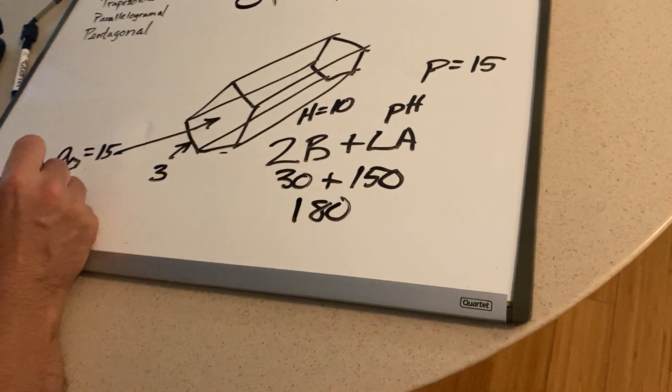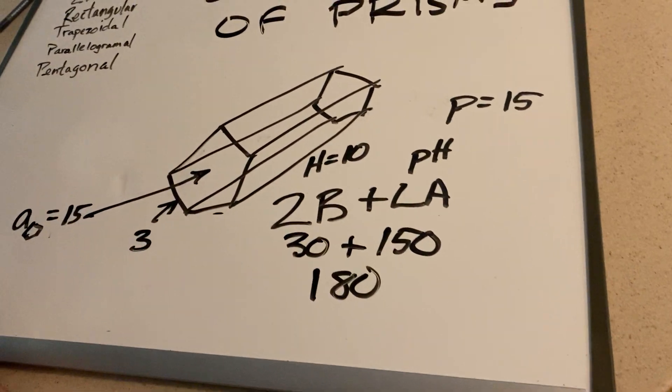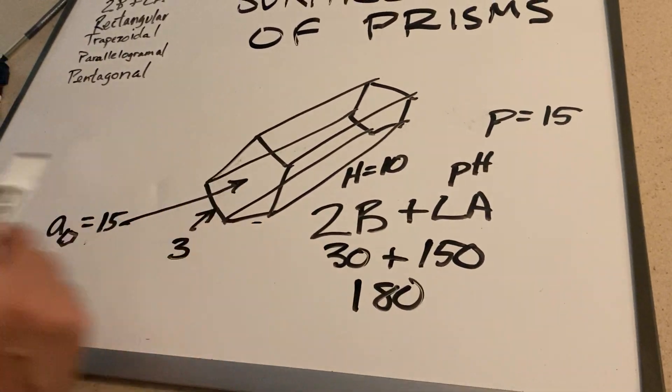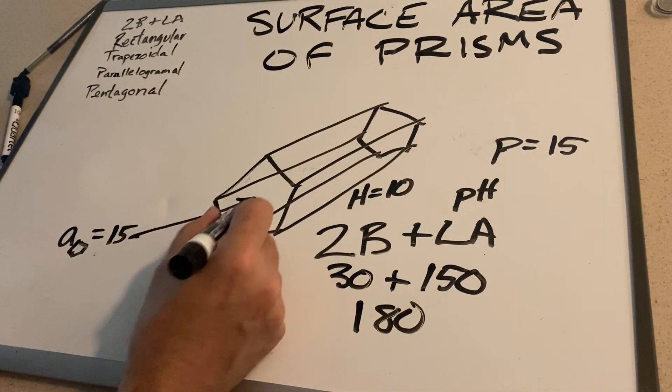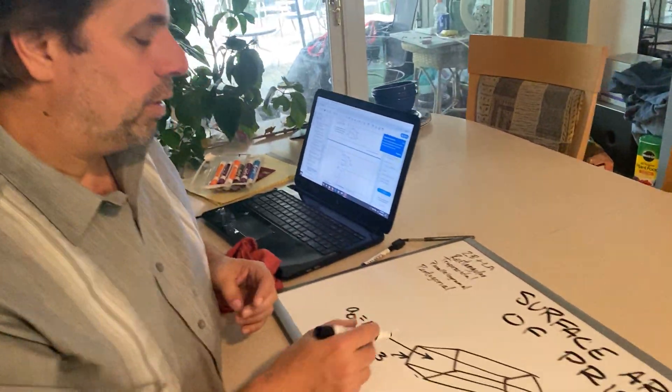In this case, they gave us the area of the base right off the bat. If they had given us the apothem and perimeter, we could have calculated the base for ourselves, but we didn't need to — they just gave it to us. There should be an assignment out there for you on the surface area of more general prisms. Give it a try and let me know if you have any questions.